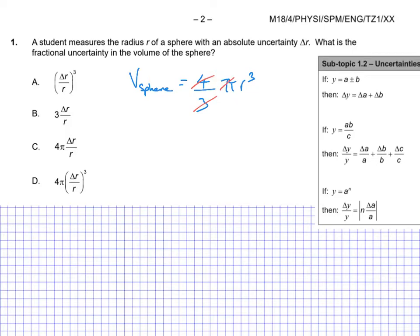And indeed pi has nothing to do with uncertainty. So we're really just interested in this r value. And that's going to be our measurement of the radius. And then the error or the uncertainty is the absolute uncertainty is this delta r.